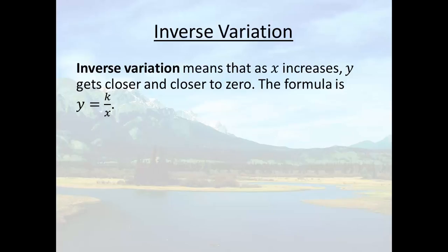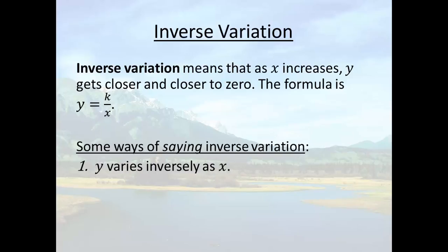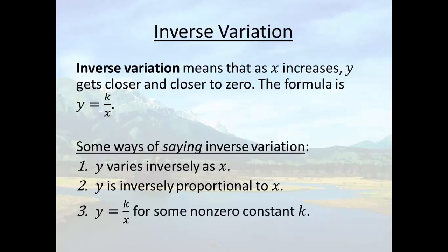And the formula is y equals k over x. Again, we have different ways that we can say it. y varies inversely as x. Y is inversely proportional to x. Or y is equal to k over x for some non-zero constant k.